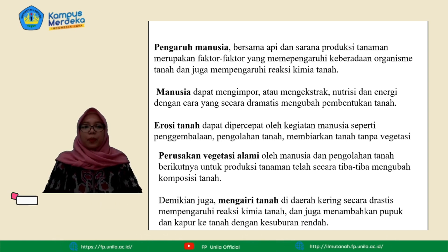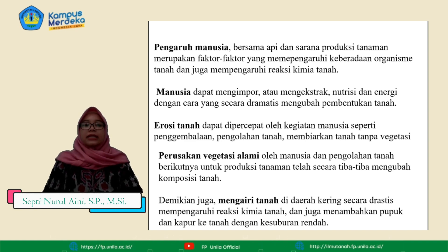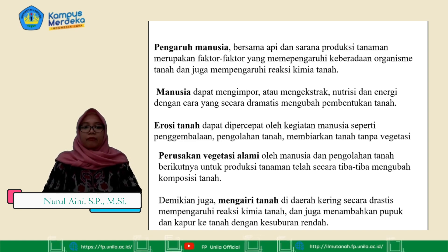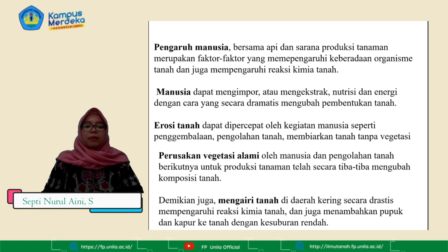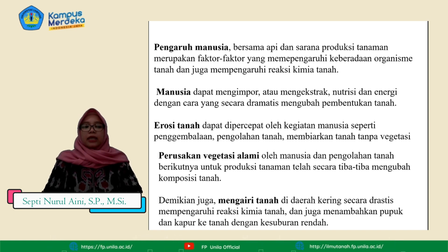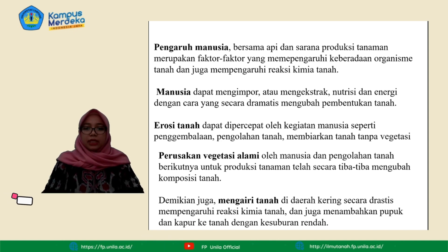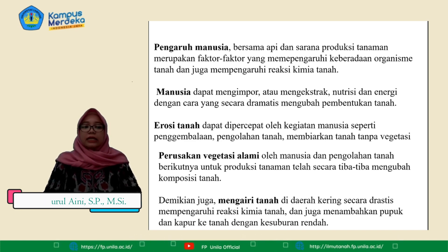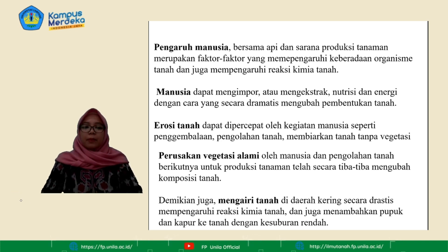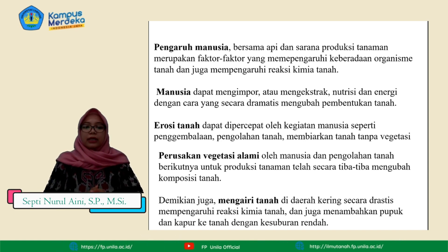Pengaruh manusia bersama api dan sarana produksi tanaman merupakan faktor-faktor yang mempengaruhi keberadaan organisme tanah dan juga mempengaruhi reaksi kimia tanah. Manusia dapat mengimpor atau mengekstrak nutrisi dan energi dengan cara mengubah pembentukan tanah. Erosi tanah dapat dipercepat oleh kegiatan manusia seperti pengembalaan, pengolahan tanah, dan membiarkan tanah tanpa vegetasi. Perusakan vegetasi alami oleh manusia dan pengolahan tanah berikutnya telah secara tiba-tiba mengubah komposisi tanah.